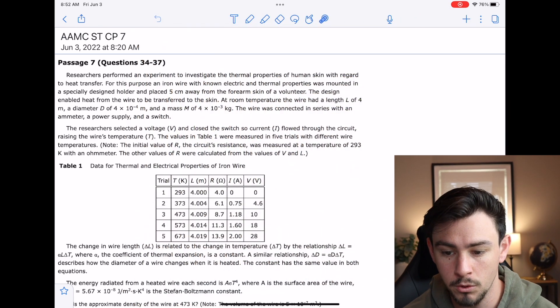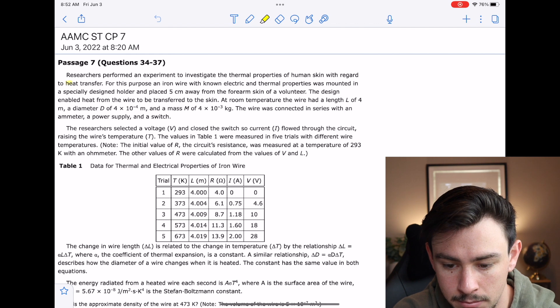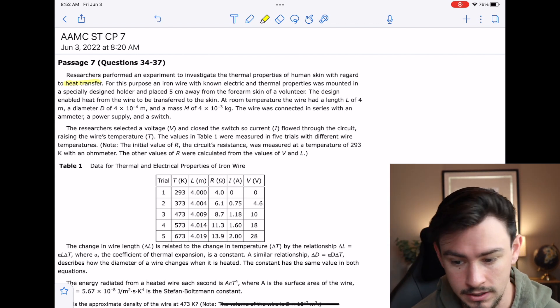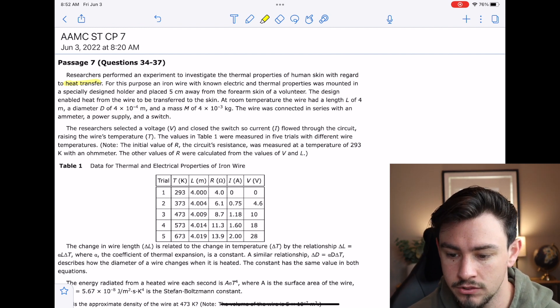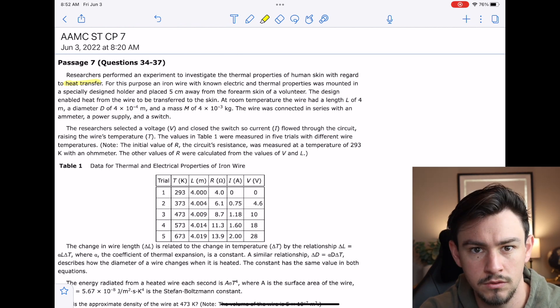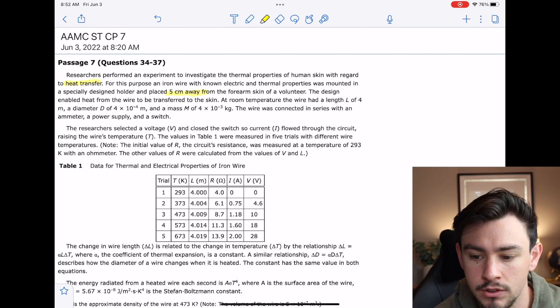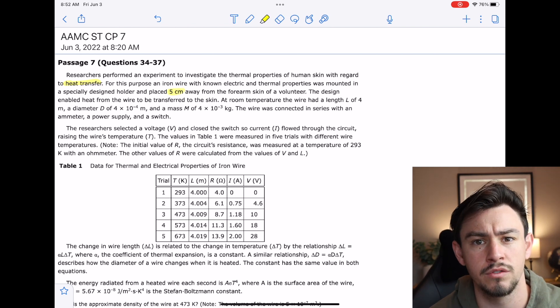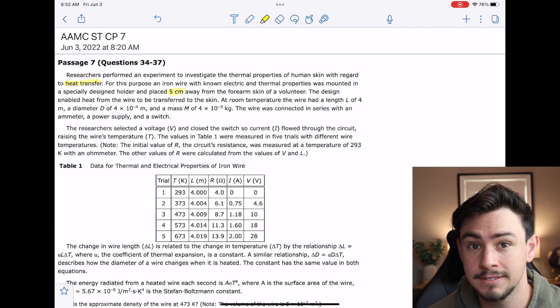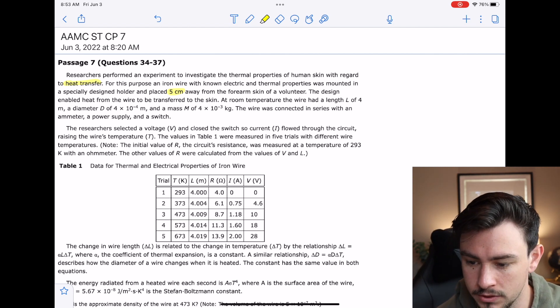So this passage says researchers performed an experiment to investigate the thermal properties of human skin with regard to heat transfer. Remember, we're highlighting basic sciences - heat transfer, that's a basic science. For this purpose, an iron wire with known electric and thermal properties was mounted on a specifically designed holder and placed five centimeters away from the forearm skin of a volunteer.